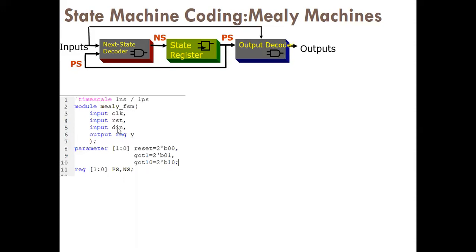We declare the states using a 2-bit parameter because we have states S0, S1, S2 corresponding to binary 00, 01, 10. So: RESET = 2'b00, GOT1 = 2'b01, GOT10 = 2'b10. We also declare 2-bit variables for present state and next state — these are the input and output of the flip-flop.